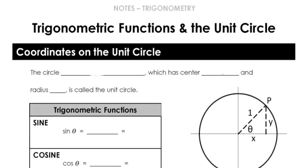Welcome back. Today we are going through lesson 13.3, which is all about trigonometric functions and the unit circle. So let's start off with what the unit circle is. The unit circle is the circle of x squared plus y squared equals one — that's the equation of the unit circle.